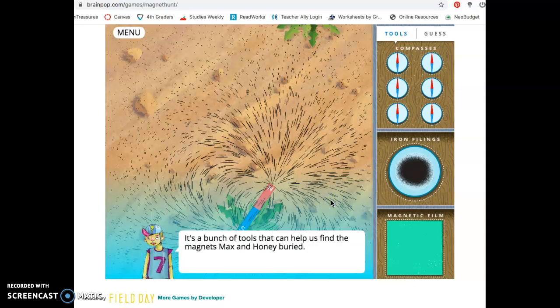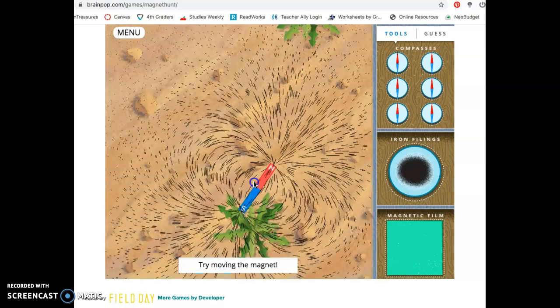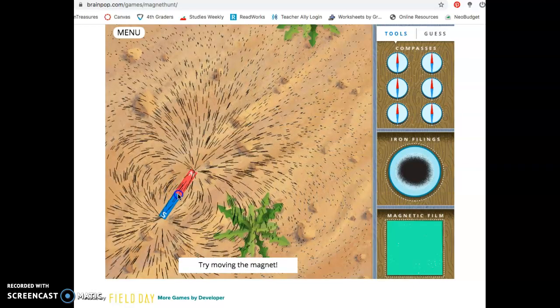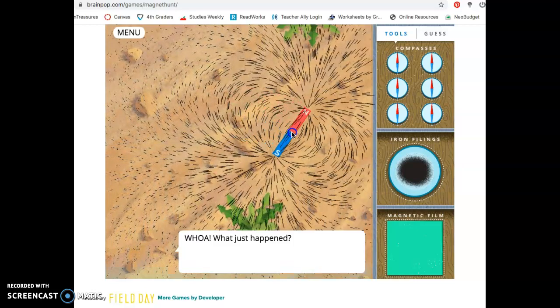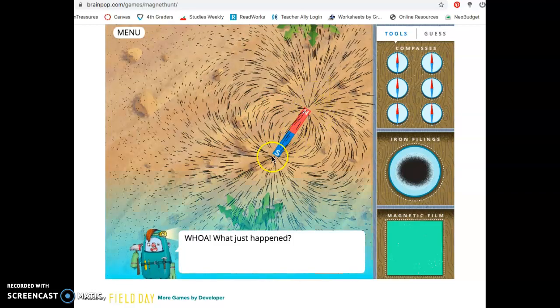It's a bunch of tools that can help us find the magnets Max and Honey buried. Luckily, Honey helped us figure out our map. Sort of. Awesome! So what are all those black things all over the dirt? Remember, that's our first tool. A bunch of little black flecks. How's that going to help? Come on, man. Wait until you see this. Try moving the magnet around a little. Okay. Do you see what happens there?